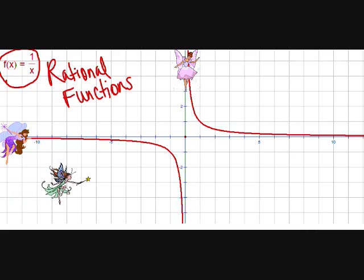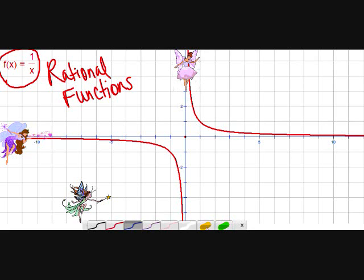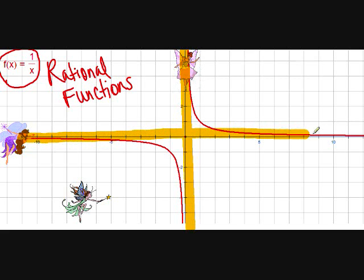So this fairy has to be very careful where she goes on the graph. And in order to keep her safe, the asymptote fairies come and they put up barriers or warnings so that the fairy knows where she can go to draw the line. So here is a vertical asymptote right here, and going the other direction, here is a horizontal asymptote.